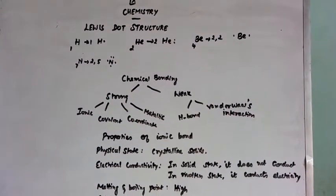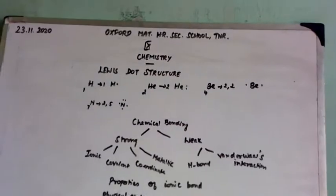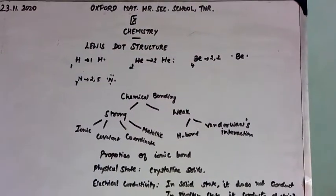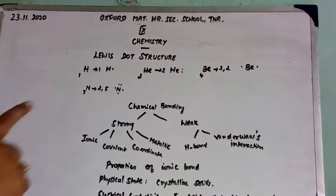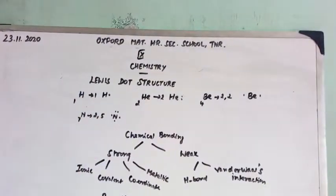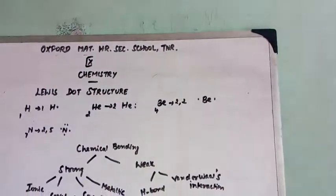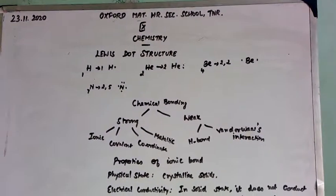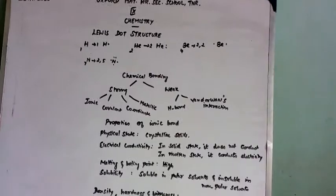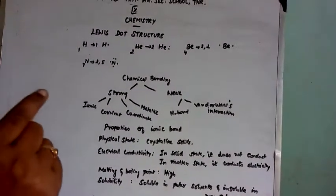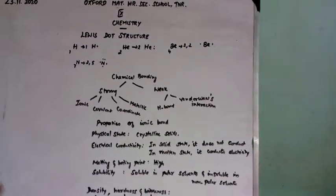This Lewis dot structure or electron dot symbol consists of the element surrounded by dots. Single dot means unpaired electron. When it is having two dots, then it is paired electron. So single dot represents unpaired electron and double dot represents paired electron.